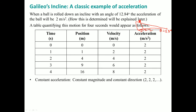The acceleration is given as 2 meters per second squared throughout. So delta V over delta T has to be equal to 2 — it has to be plus 2 each time, because that is the acceleration.